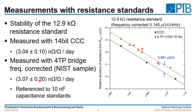We can also see a slight deviation between the CCC data at DC and our AC measurement, even though we correct the frequency response of our reference resistance. This deviation is small but we want to shrink it further. It could be that we have a different frequency correction for our standard which has to be remeasured, or there is some systematic effect in our system which we have to find.